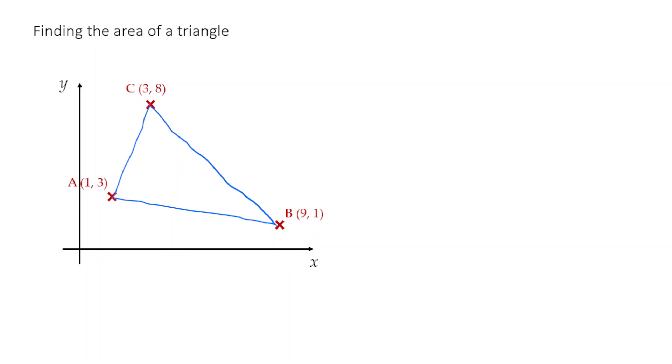So take a very simple example. We've got a triangle here that is defined by the points A, B and C that you can see there. So what we're trying to find is the area of that triangle.